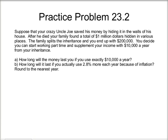This is Practice Problem 23.2. Suppose that your crazy Uncle Joe saved his money by hiding it in the walls of his house. After he died, your family found a total of $1,000,000 hidden in various places. The family splits the inheritance and you end up with $200,000. You decide you can start working part-time and supplement your income with $10,000 a year from your inheritance.